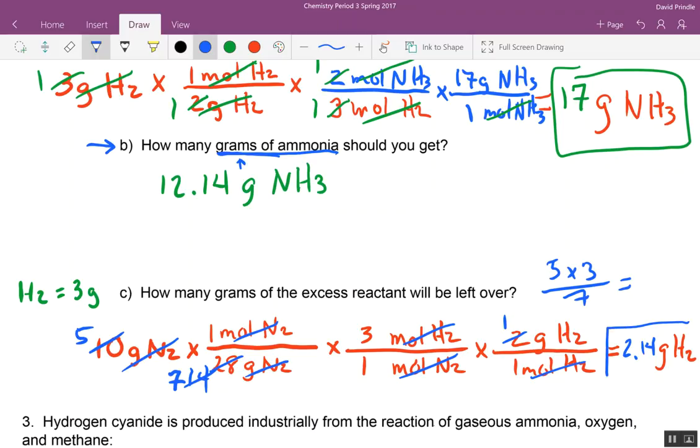Now what this says is if I start with my ten grams of nitrogen, if I start with my ten grams of nitrogen, this is how much hydrogen I'm going to use up. How much did we start with? We started with three grams. We used up 2.14 grams. How much is left over? Point eight six. Point eight six grams of hydrogen.